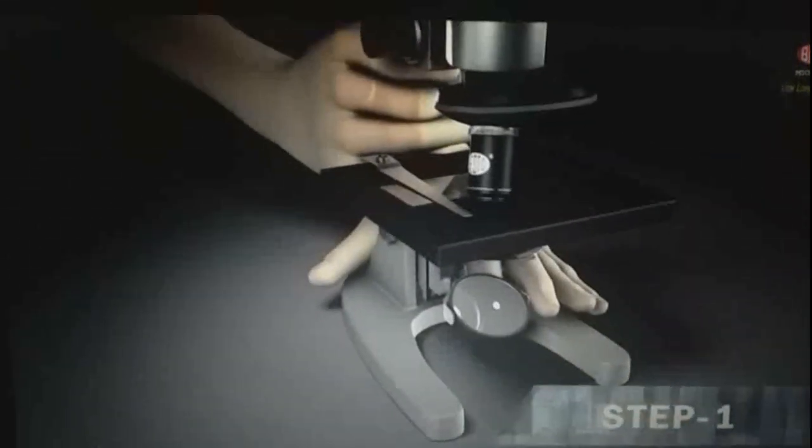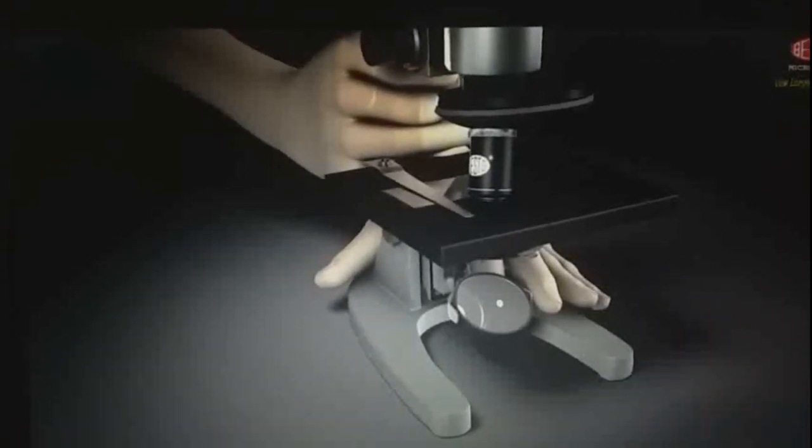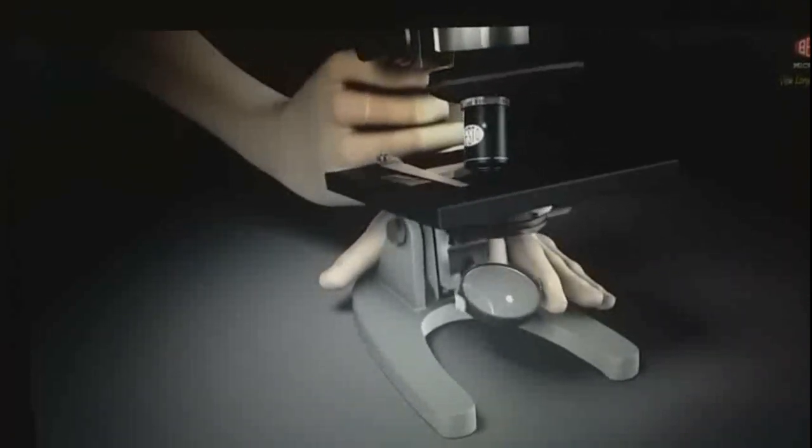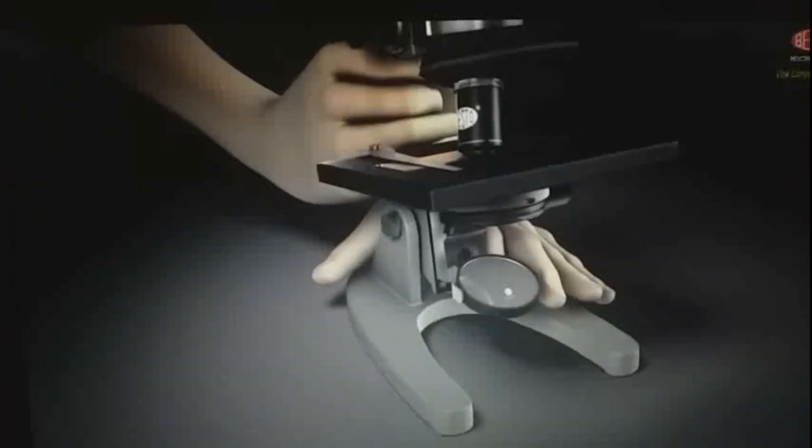Number 1. Remove the microscope from the cover. Pick it up and grasp it firmly with both hands, one hand under the base whereas the other hand on the arm. Place it on the table away from the edge. Move it to the position through which you look comfortably. You can tilt it while sitting.